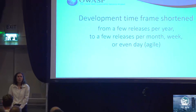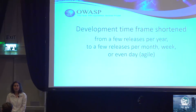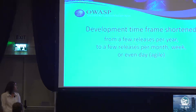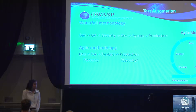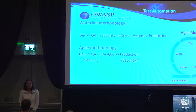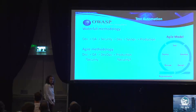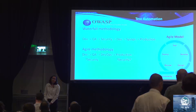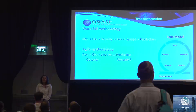As more and more companies are transitioning from waterfall methodology to Agile methodology, there is a high increase in the number of releases per year. And as a result, while we had time in waterfall methodology, we don't have time in Agile methodology. We don't have the time slot to do security testing. Therefore, the solution we are going to talk about is using the QA phase to integrate more security testing.